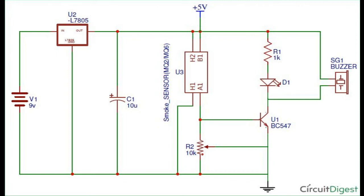The negative terminal of the LED is connected to the collector of the BC547 transistor amplifier. You can also provide a feedback connection to the SG1 buzzer, with one port above R1 which is 1k, and at the negative terminal of the diode. That is all of the circuit.